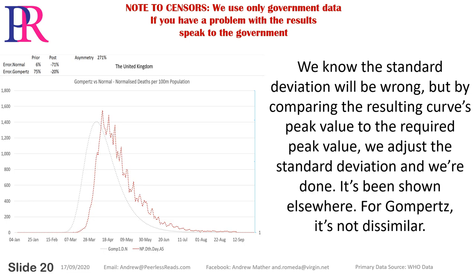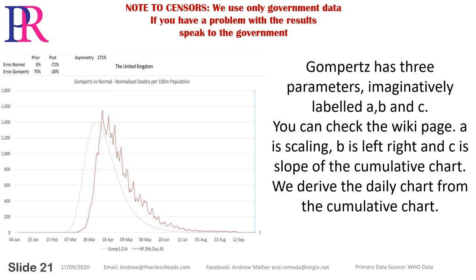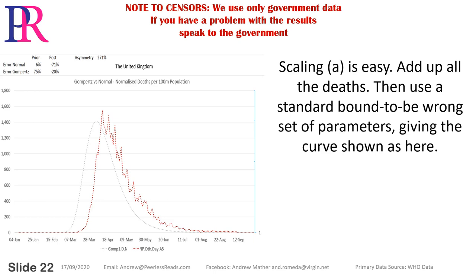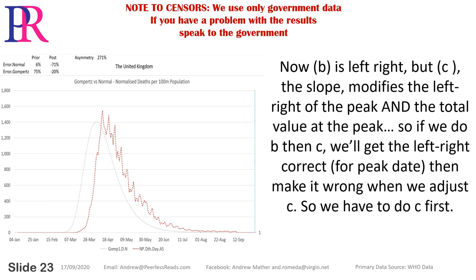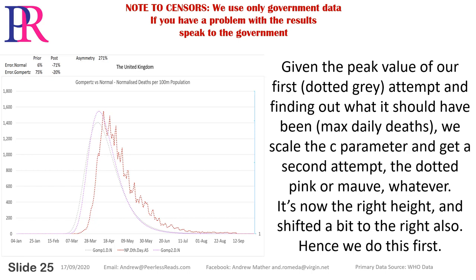For Gompertz it's not dissimilar. Gompertz has three parameters imaginatively labelled A, B, and C — you can check the wiki page. A is scaling, B is left to right, and C is the slope of the cumulative chart. We derive the daily data from the cumulative chart. Scaling A is easy: add up all the deaths, then use a standard bound set of parameters giving the initial curve. Now B is left-right, but C — the slope — modifies the left-right of the peak and the total value at the peak. So we have to do C first. Given the peak value of our first dotted grey attempt and finding what it should have been — max daily deaths — we scale the C parameter and get a second attempt, the dotted pink. It's now the right height and shifted a bit to the right also.